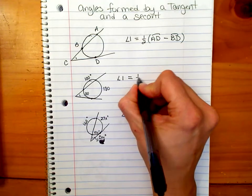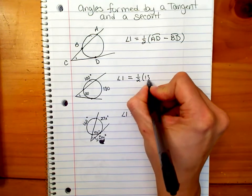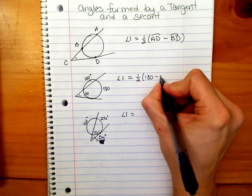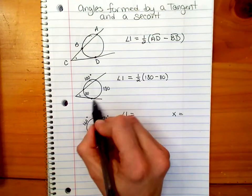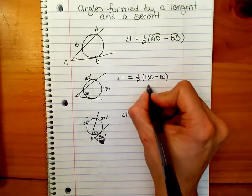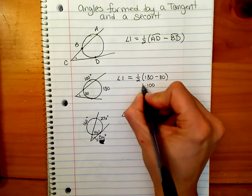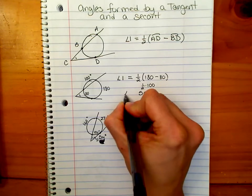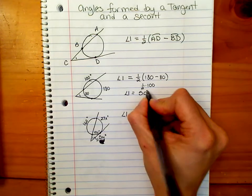So angle 1 is equal to one half the bigger arc, the 180, minus the smaller arc, the arcs that are intercepted by the tangent and the secant. 180 minus 80 is 100, and half of 100 is 50. So angle 1 is 50 degrees.